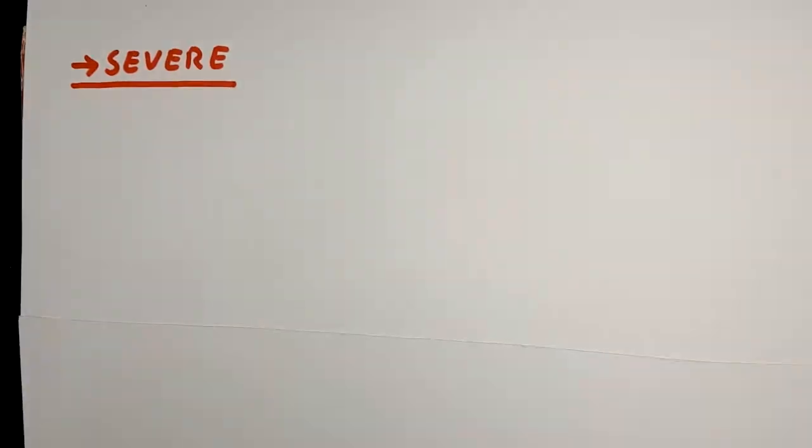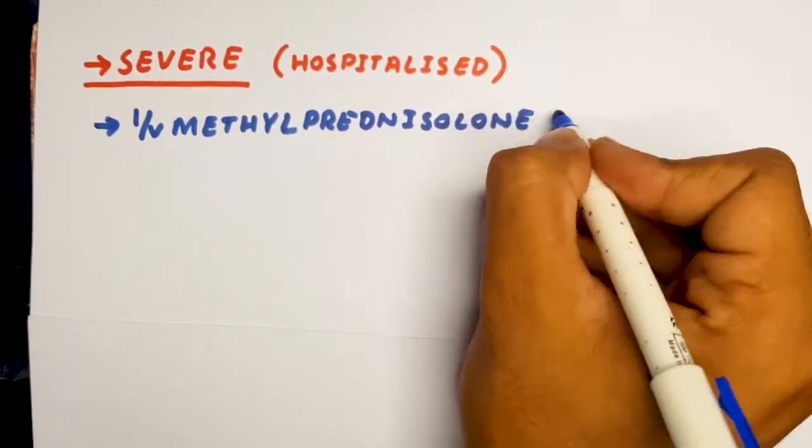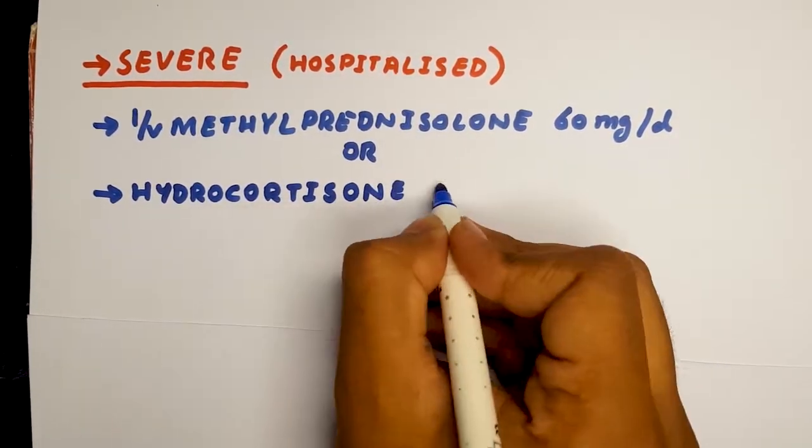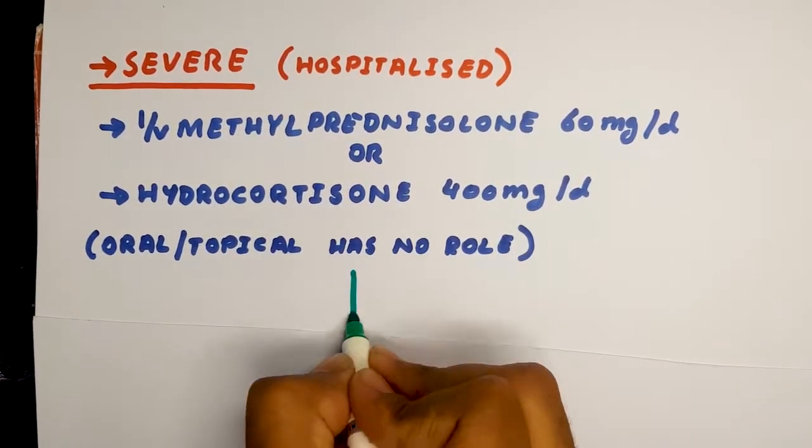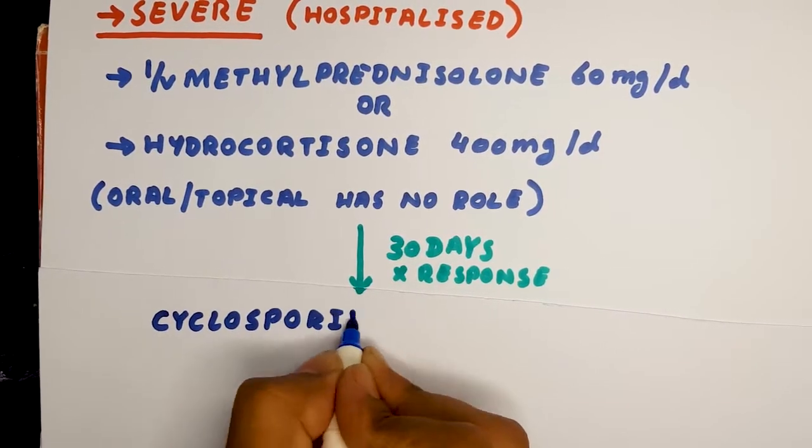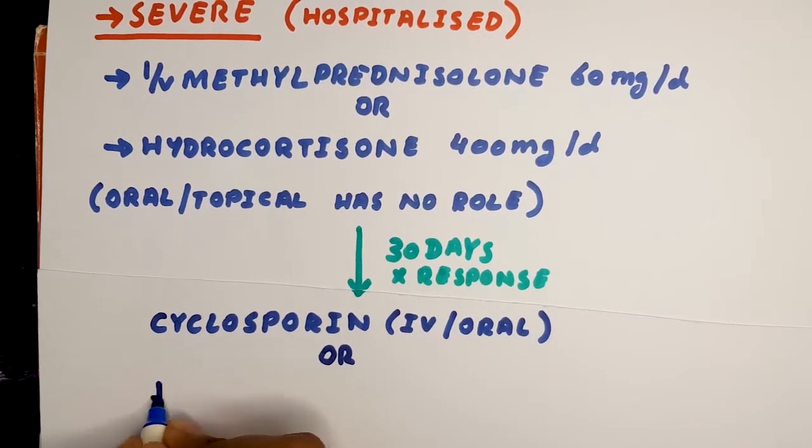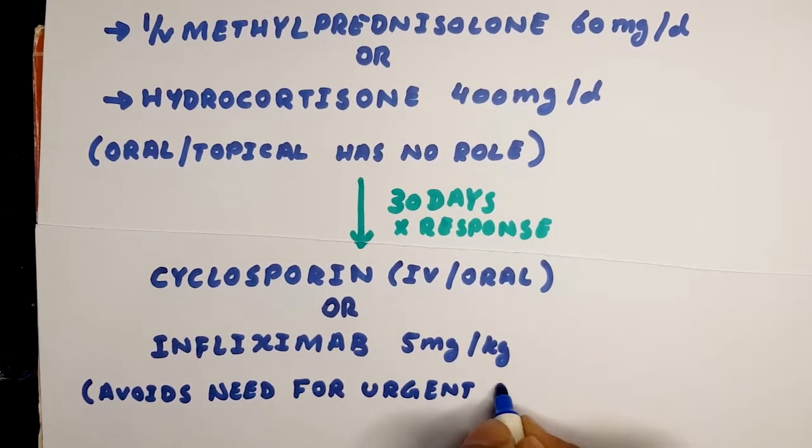In cases of severe ulcerative colitis, the patient needs to be hospitalized and we give IV methylprednisolone or hydrocortisone. At this point, oral or topical has no role. If even after 30 days the patient fails to show response, we start immunomodulation through cyclosporine and infliximab, and this is only to avoid an urgent colectomy.